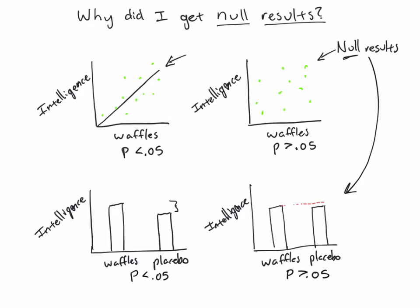The reason we call them null results is because these results fail to reject the null hypothesis. And again, the null hypothesis is just the hypothesis that there is no relationship. So the hypothesis that there's no relationship between waffles and intelligence. We're failing to reject that here because we aren't finding any evidence of it.